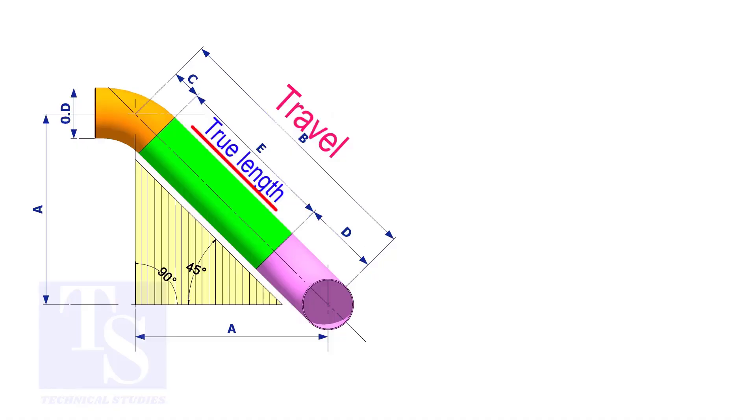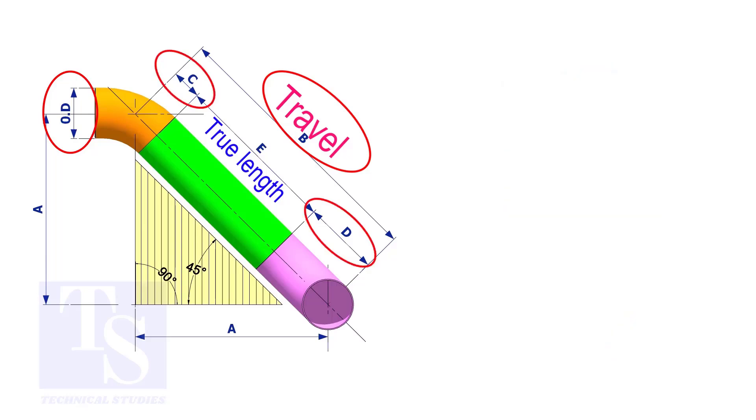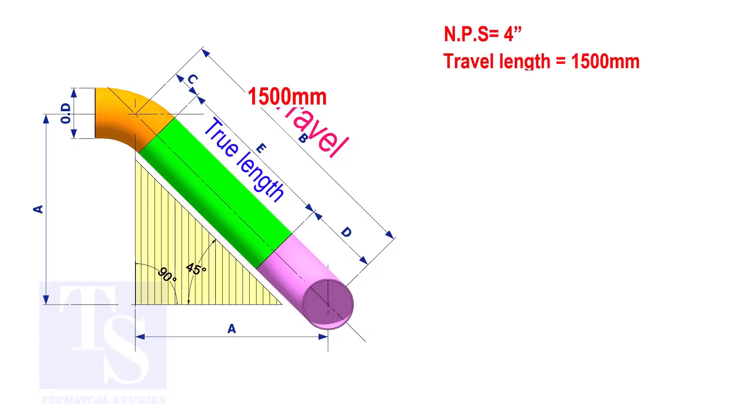To calculate the true length or the cut length, we need to know the travel length, the diameter of the pipe, the joint gap, and the elbow center. The elbow center is sometimes called takeoff length. Assume that the elbows are short radius. Nominal pipe size is 4 inch. The travel length is 1500 millimeters. The joint gap is 3 millimeters. Calculate the true length of the spool.